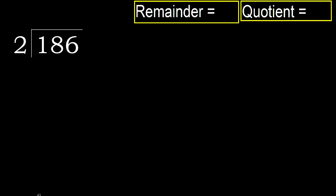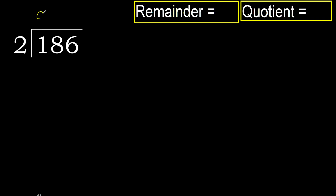186 divided by 2. 1 is less, therefore next. 18 is not less, therefore work with 18. 2 multiplied by which number is nearest to 18 but not greater? 2 multiplied by 9 is 18.